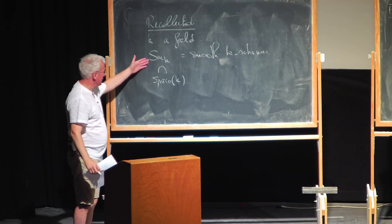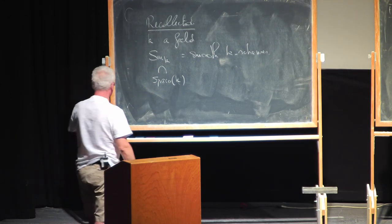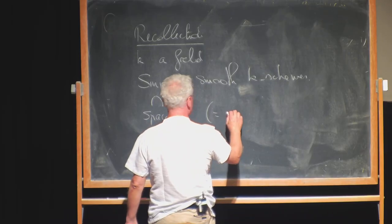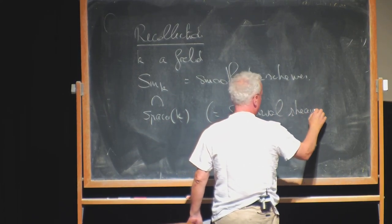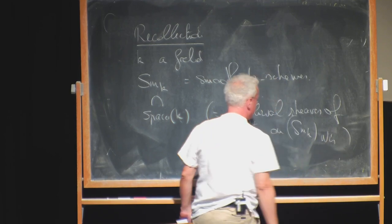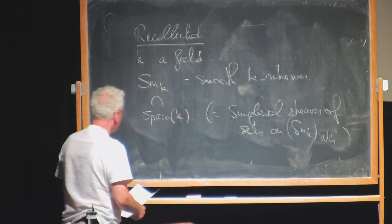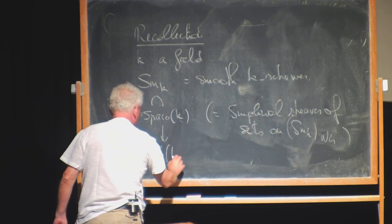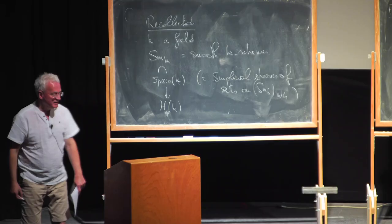You want to extend that category because you cannot perform all the usual constructions like quotients — if you have a sub-open subset you cannot take the quotient — but here you can, and you have infinite sums and everything. For me it would be the category of simplicial sheaves of sets on the category Smooth/k in the Nisnevich topology, and this leads to the homotopy category.